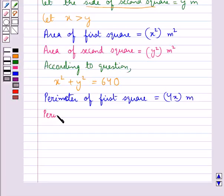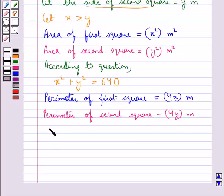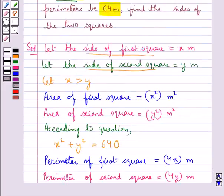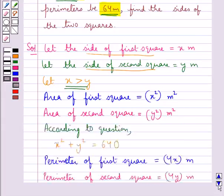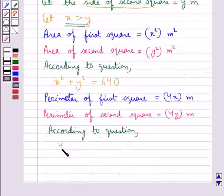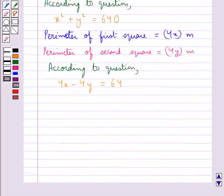The perimeter of the second square is equal to 4y meters. According to the question, the difference between the perimeters of both squares is 64 meters, and we have taken x greater than y. So we write 4x minus 4y is equal to 64, which gives us x minus y is equal to 16.